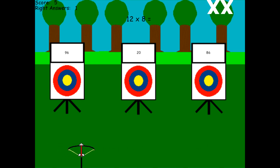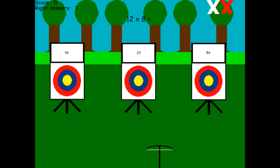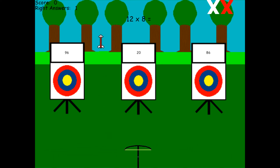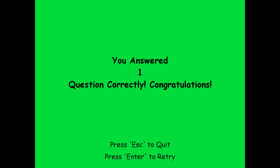A wrong answer results in an X, which is a strike, and even misses do. The game ends when they get two strikes. That was just a brief overview for that one.